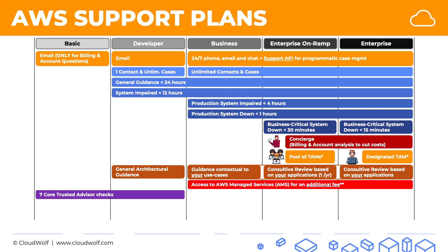For Trusted Advisor: you get seven core trusted advisor checks with the first two plans, including the free basic plan. In the business, enterprise on ramp, and enterprise plans, you get all trusted advisor checks — and that's another important exam question.